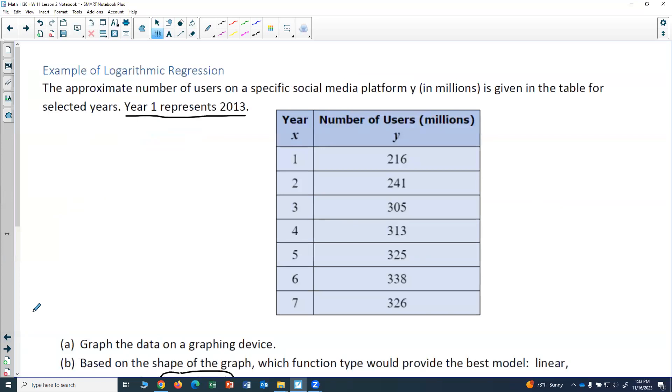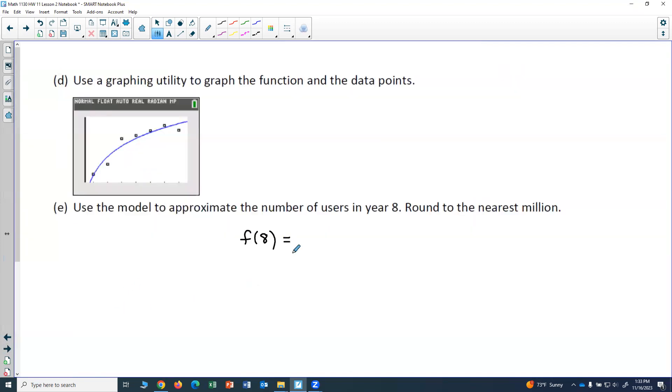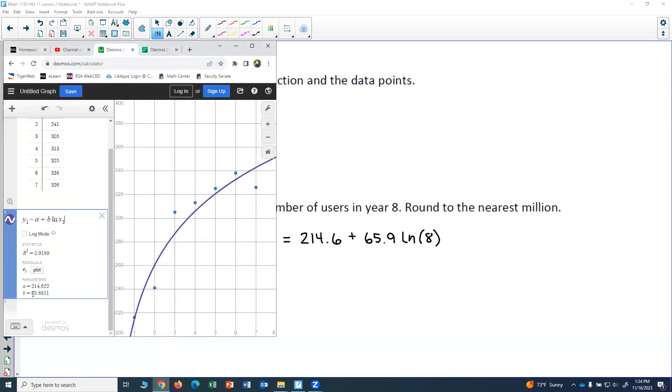So going back to my function I have 214.6. So I'm going to write that down: 214.6 plus 65.9 natural log of x. I'm going to put an 8 in for x. So let me pull up my Desmos calculator and make sure I got the right numbers. 214.6 plus 65.9 natural log of 8.